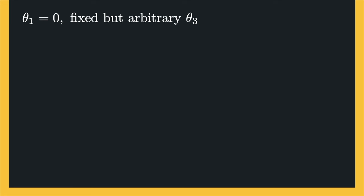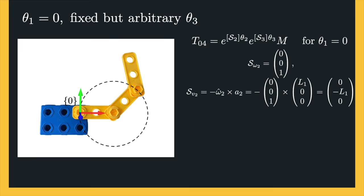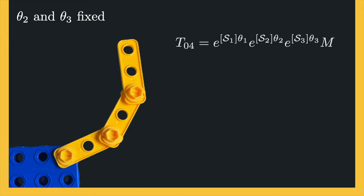For theta 1 equal to zero and fixed but arbitrary theta 3, rotation about joint 2 can be viewed as applying the screw motion to the rigid link 2 and 3 pair. Then the configuration of the end effector in the base frame can be updated as a new transformation matrix. Using the same method, the angular and linear components of the second screw axis can be calculated. Finally, with theta 2 and theta 3 fixed, we consider the rotation about joint 1, which is equivalent to applying a screw motion to the entire rigid 3-link assembly. For arbitrary values of theta 1, theta 2, and theta 3, the final configuration of the end effector in the base frame is updated accordingly. The first screw axis is written similarly; note that the arbitrary point is at the center of the base frame, so the linear part is zero.